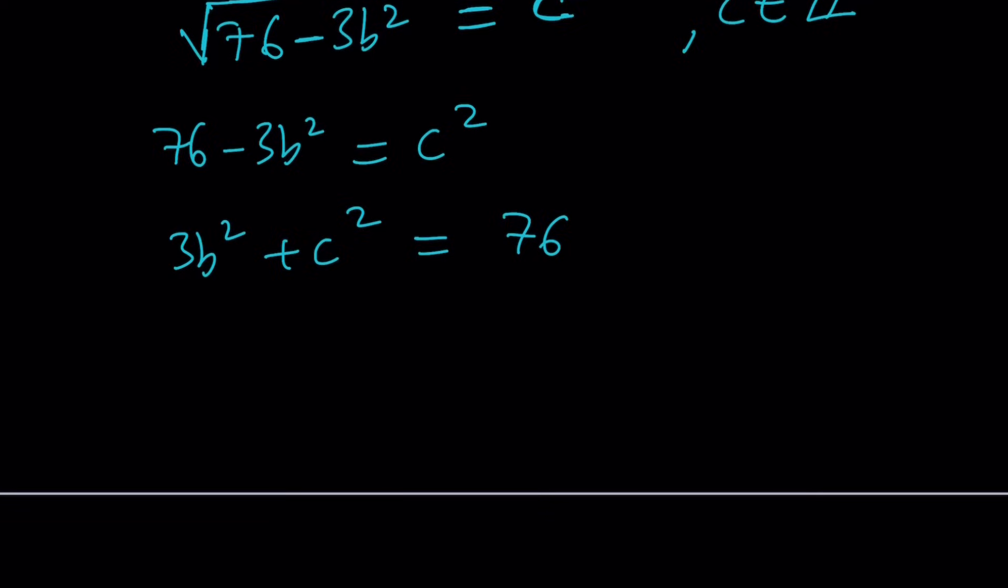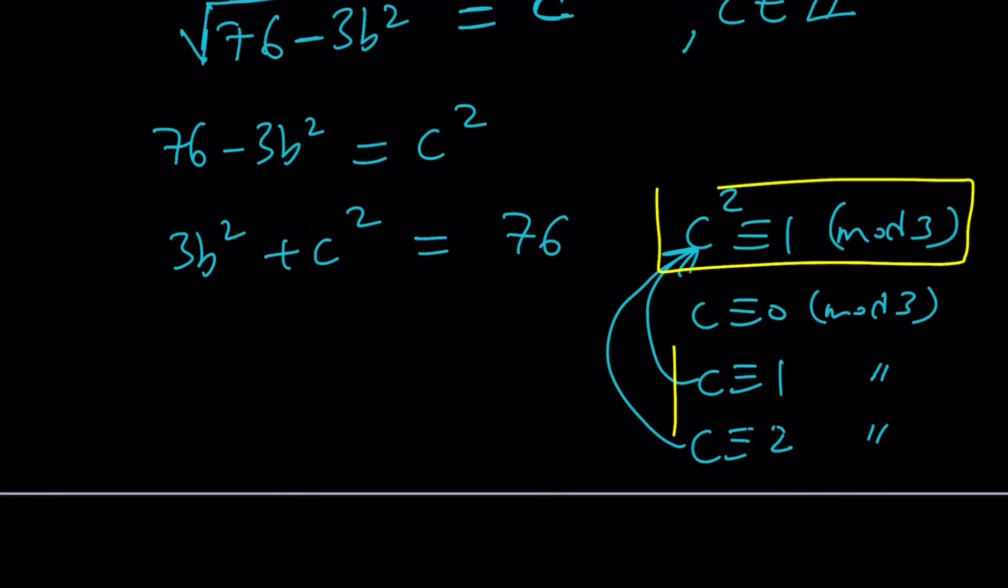When you look at 3b squared mod 3, this is 0 mod 3. And 76 is 1 mod 3. So we want c squared to be equivalent to 1 mod 3. When can that happen? If c is 0 mod 3, which means it's a multiple of 3, then its square is going to be 0 as well. If c is 1 mod 3, its square is going to be 1 mod 3. If c is 2 mod 3, then its square is going to be 4 mod 3, but that's the same thing as 1 mod 3. So there are two kinds of numbers whose square is 1 mod 3, and those numbers are all numbers that are not multiples of 3. In other words, to keep a long story short, c should not be a multiple of 3.